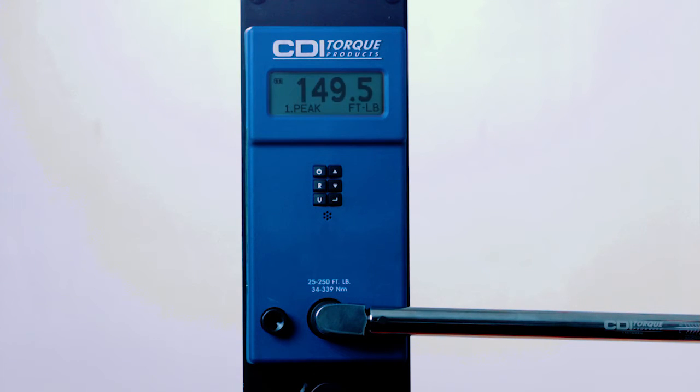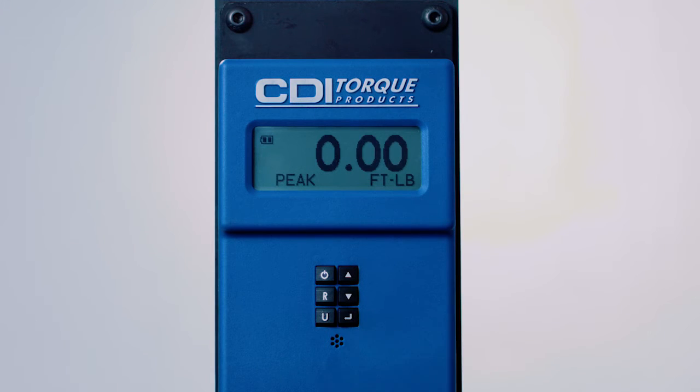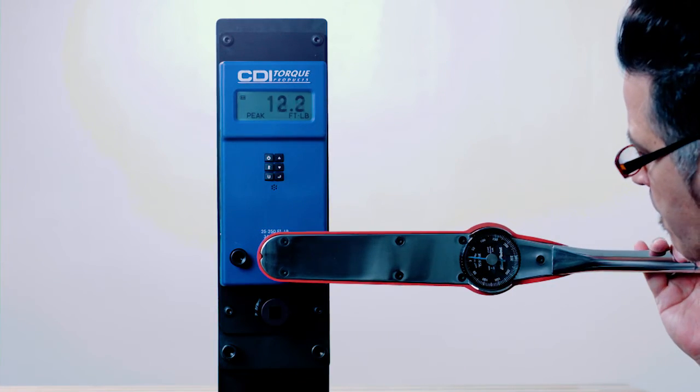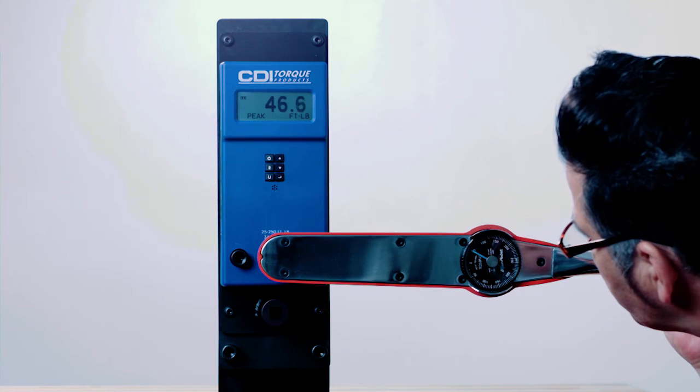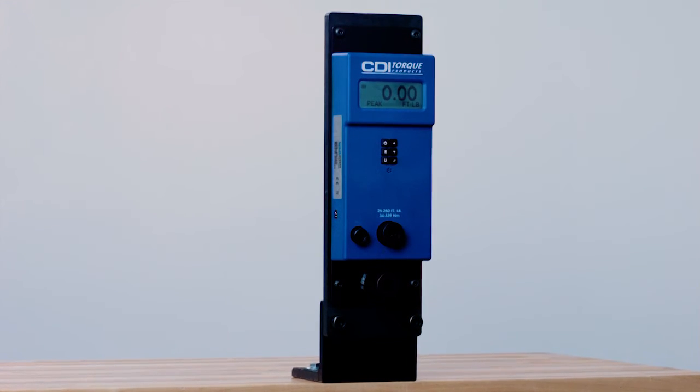To test dial type torque wrenches, select peak mode. Apply torque until the setting of the wrench is reached and compare the reading to the value on the tester. Again, the standard accuracy for dial wrenches is plus or minus 4% of the target torque.